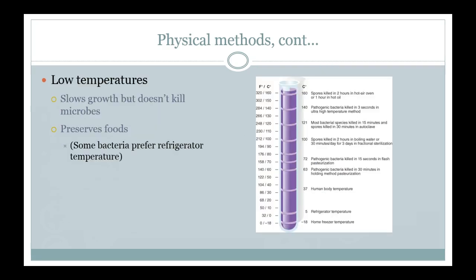Low temperatures usually slow bacterial growth but don't necessarily kill bacteria. If food has bacteria that prefer room temperature and you put it in the refrigerator, you're likely not going to get any multiplication. We can handle a few bacteria — it's when they multiply to higher amounts that they could make us sick. Lower temperature simply slows growth but usually does not kill.